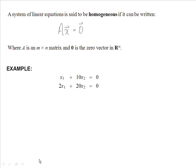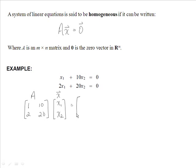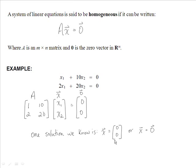We're going to look at this example. Our matrix A will be the coefficient matrix — the coefficients of x1 and x2 — which will be 1, 10 and 2, 20. Our vector x is just the variables x1 and x2, and that equals the zero vector, which is a column vector of all zeros. One solution we know is that x could equal the zero vector, meaning if I multiply matrix A by 0, I get zeros.